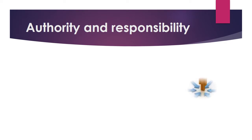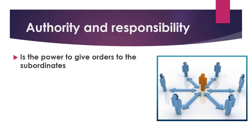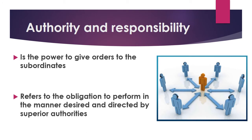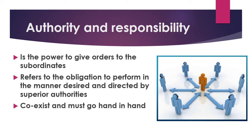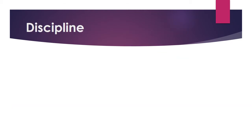The next principle is Authority and Responsibility. Authority is the power to give orders to subordinates. Responsibility is the obligation to perform in the manner desired or directed by superior authorities. Authority and responsibility must go together — they must be balanced. If a manager has authority without responsibility, it leads to irresponsible behavior. If there is responsibility without authority, management becomes ineffective.